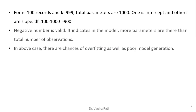For n=100 records and k=999 independent variables, total parameters including intercept is 1000. Therefore degree of freedom is 100 minus 1000, which equals -900. The formula is n-k-1. A negative degree of freedom is valid but indicates that more parameters exist than total observations. This is not a good sign because there are chances of overfitting as well as poor model generation.